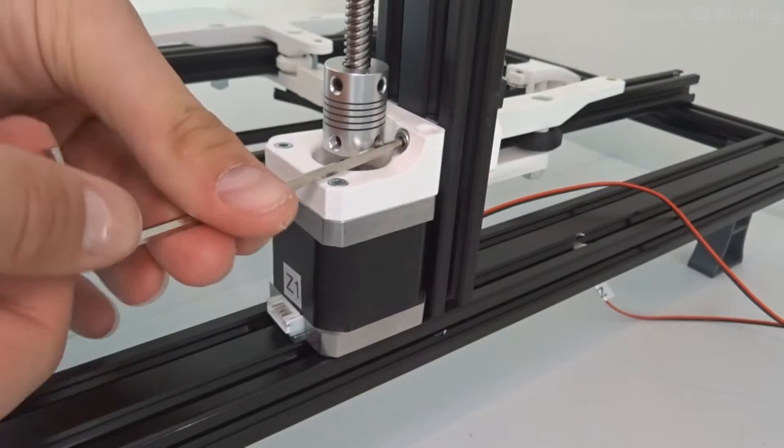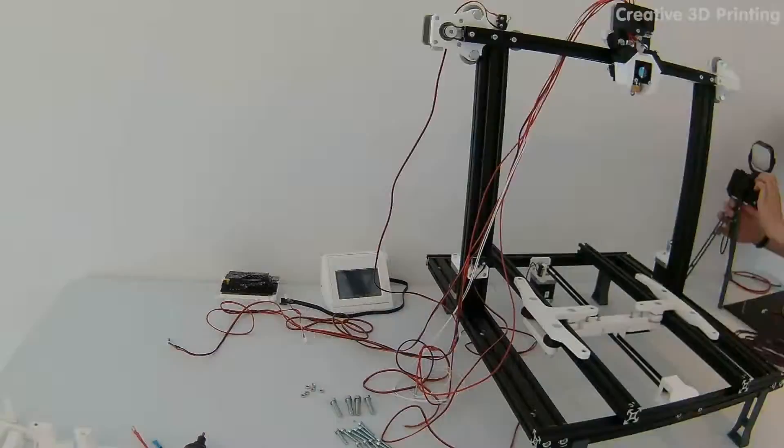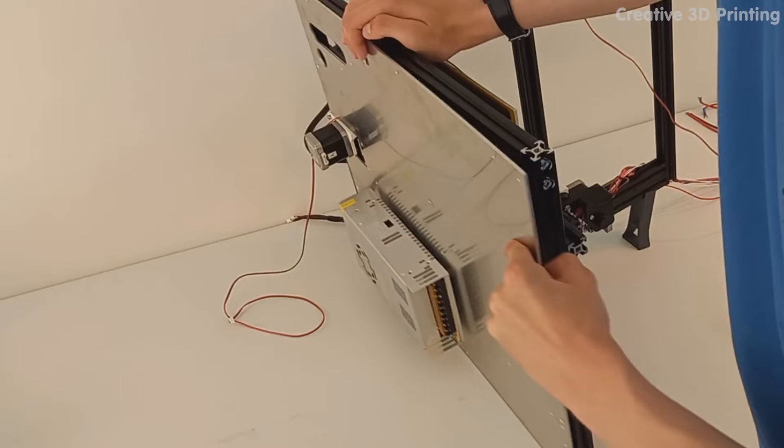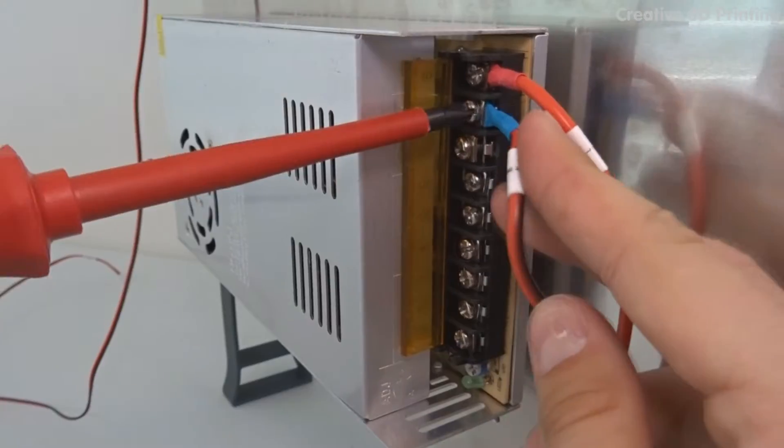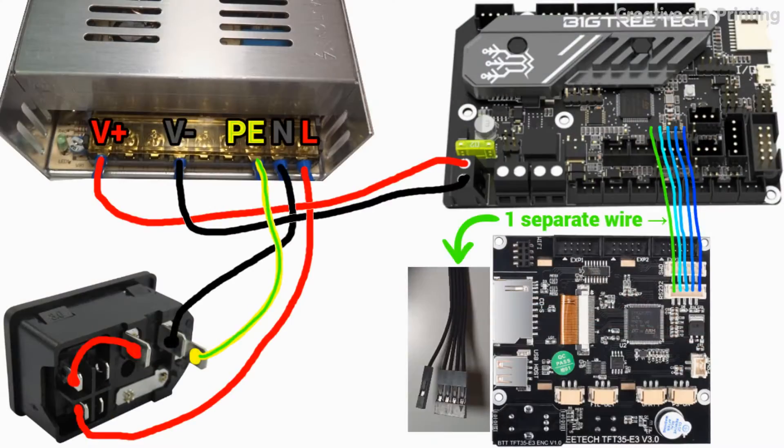The Z stepper motors are mounted with M4 T-slot nuts for stable mounting. To assemble the extruder tower, I carefully screw the lead screw into the lead screw nut. I mount the aluminum plate with six M4 hexagon socket screws. Then I connect the motherboard to the switch and the power supply according to this diagram.